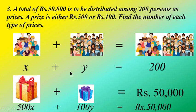Now let us see the second category — according to the amount distribution. Since rupees 50,000 is distributed to two sets of people, we don't know how many persons received the prize worth rupees 500 and how many received the prize worth rupees 100. So we can write: 500 into number of persons plus 100 into number of persons equals rupees 50,000.